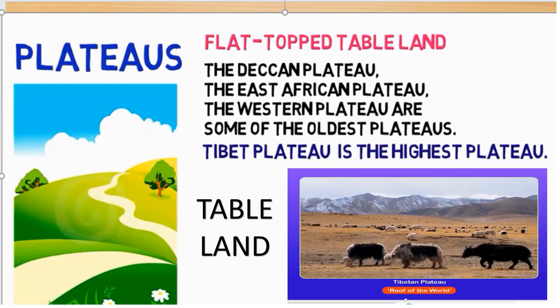Plateaus are also called tablelands because of their flat raised surface, which is often steep-sided. The area and height of a plateau varies from a few square kilometers to thousands of square kilometers. Plateaus are formed in many ways; uplifting of the earth's crust by volcanic activity is one of the main causes of plateau formation. There are several types of plateaus: uplifted plateaus, inter-mountain plateaus, Piedmont plateaus, and volcanic or lava plateaus. The Tibetan Plateau is the highest plateau in the world, also called the Roof of the World. The Deccan Plateau, the East African Plateau, and the Western Plateau are some of the oldest plateaus.